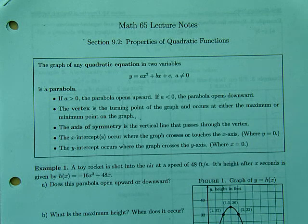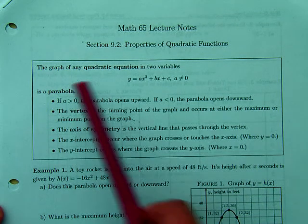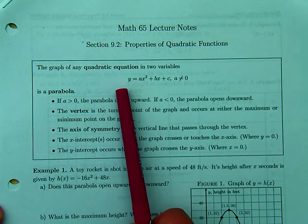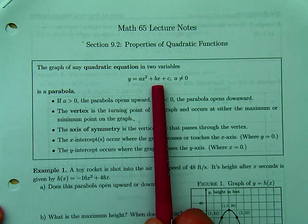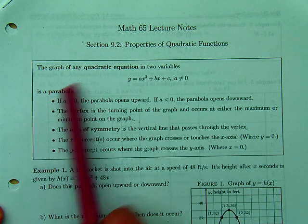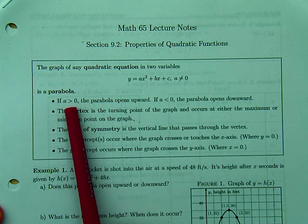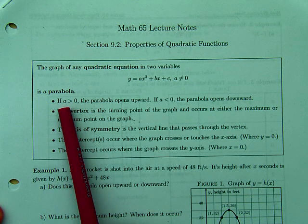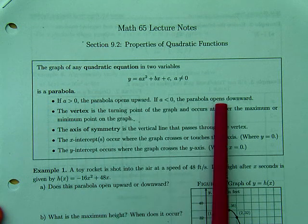Looking at properties of quadratic functions. Quadratic equations are in the form y equals ax squared plus bx plus c, where a cannot equal zero. The graph of it is a parabola. When a is greater than zero, meaning a is a positive number, the parabola will open upward.